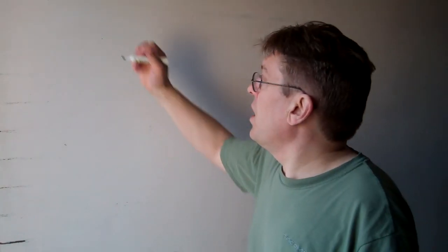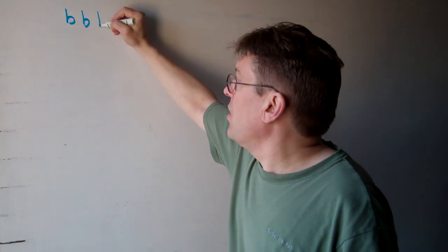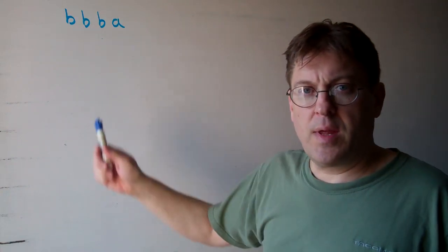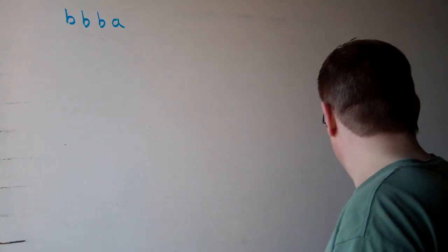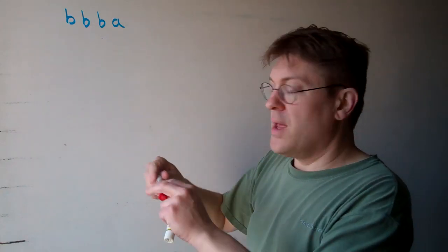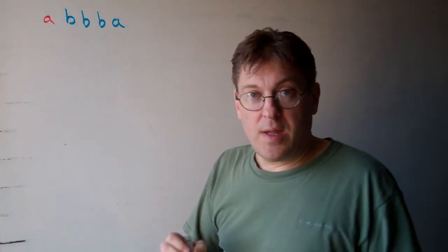Suppose that we were going to take a Post machine and we're going to add a character at the beginning of this string. So let's suppose we start with the string BBBA. We want to add the letter A at the beginning of that string.